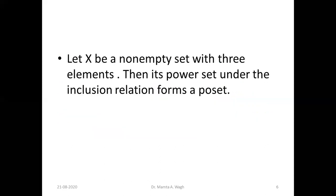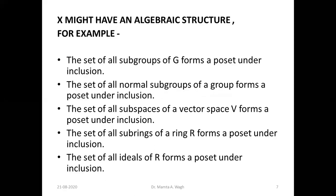Next, let X be a non-empty set with three elements a, b, c. Its power set under the inclusion relation forms a poset. The power set of X contains all subsets: the empty set, {a}, {b}, {c}, {a,b}, {b,c}, {a,c}, and {a,b,c} — eight elements. The inclusion relation means two subsets A and B are comparable if A is contained in B. Under this relation, the power set forms a partially ordered set.